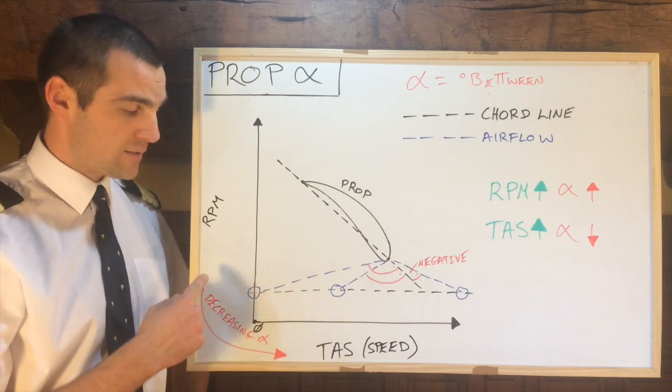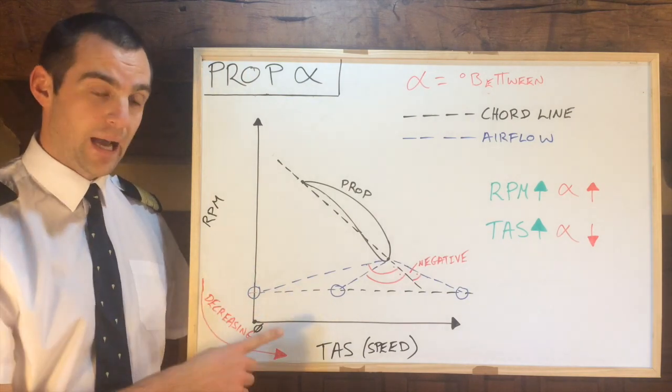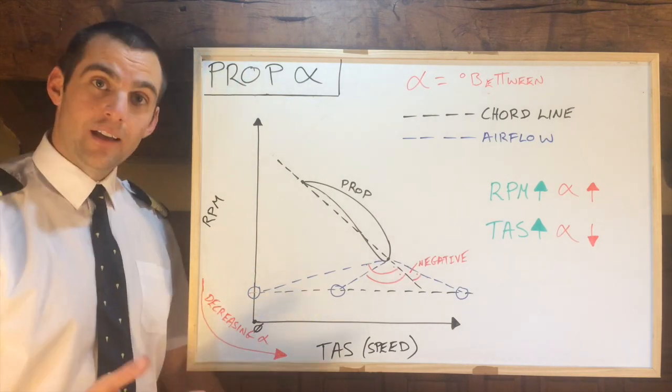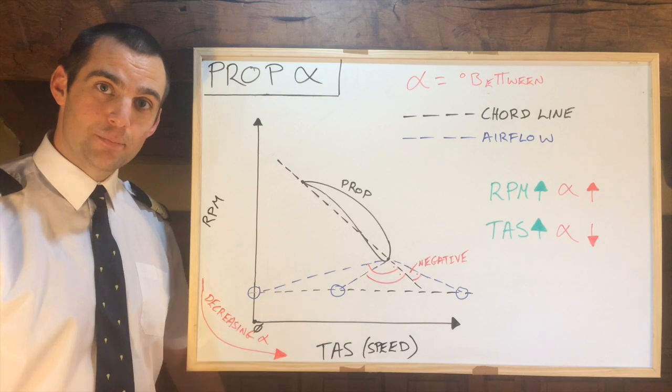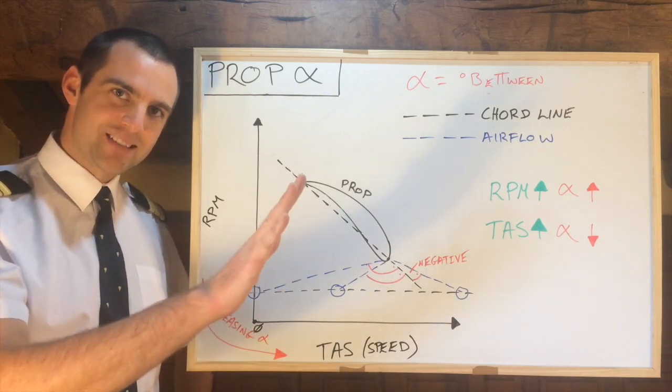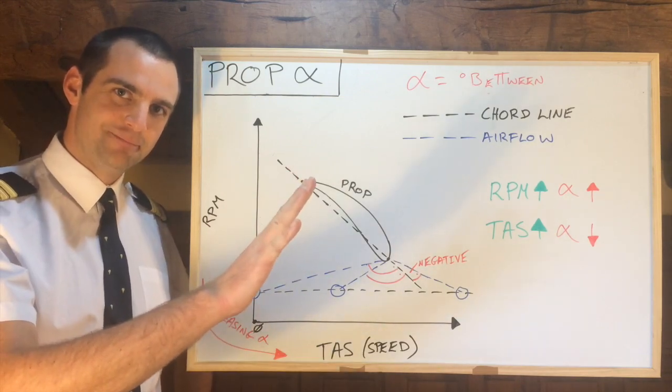I hope that diagram has given you a better picture of the angle of attack of a propeller, relative to the RPM and the TAS. If you'd like to see more videos, please like, share and subscribe. All the best, and until next time.